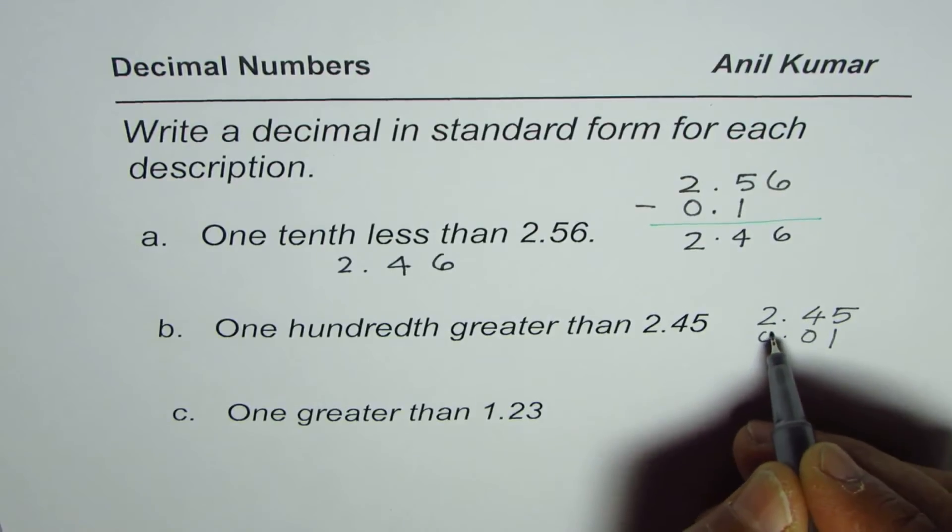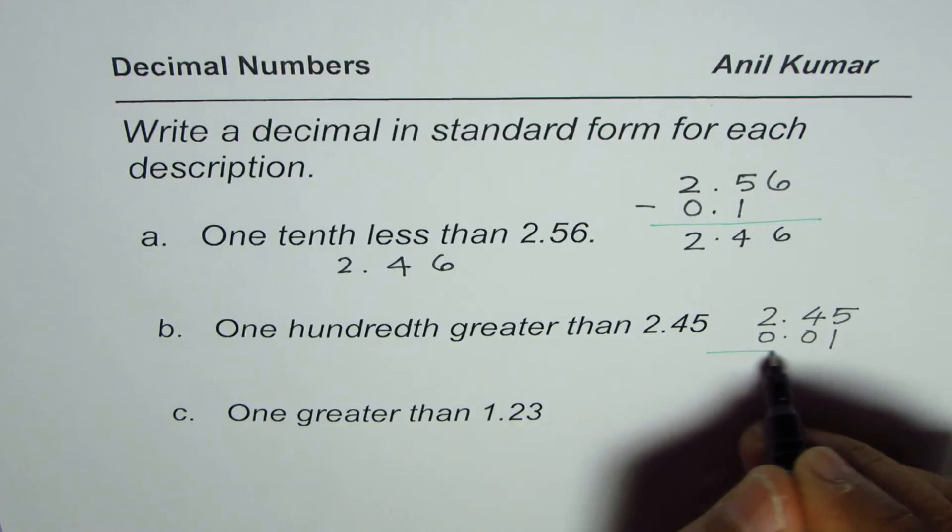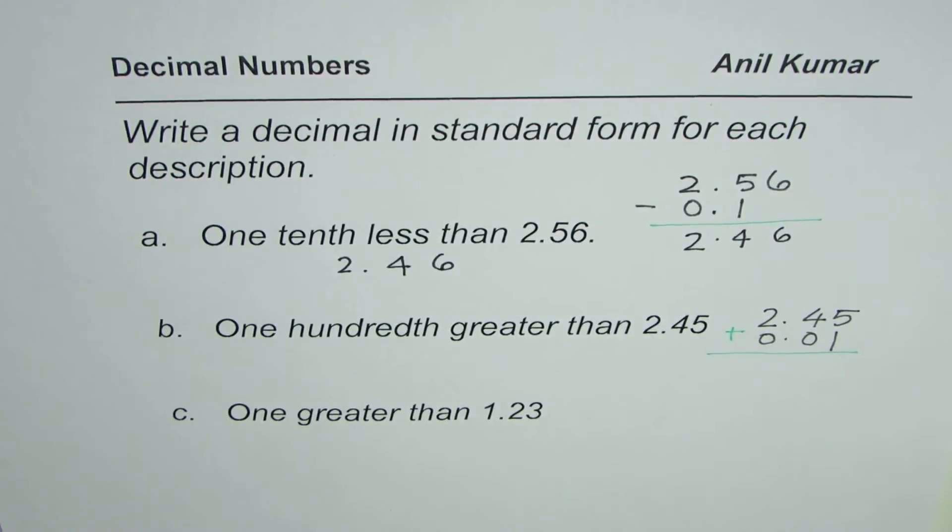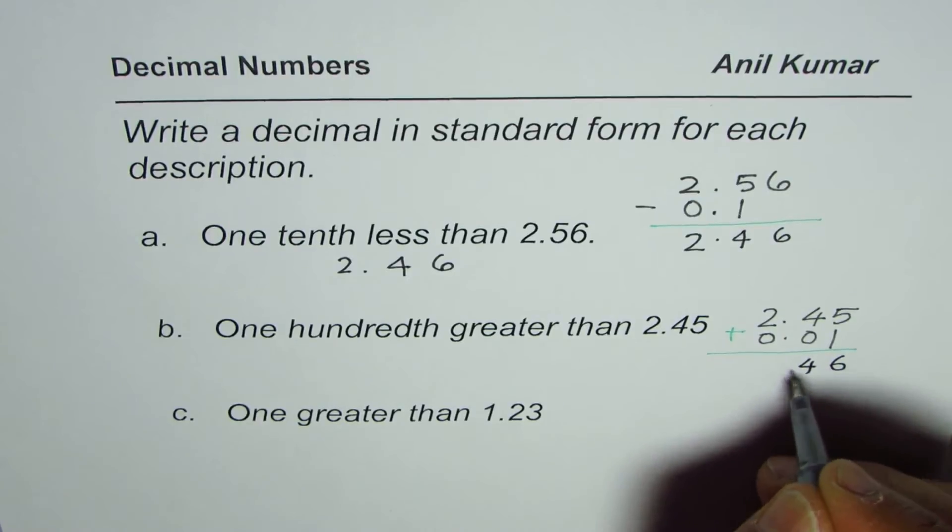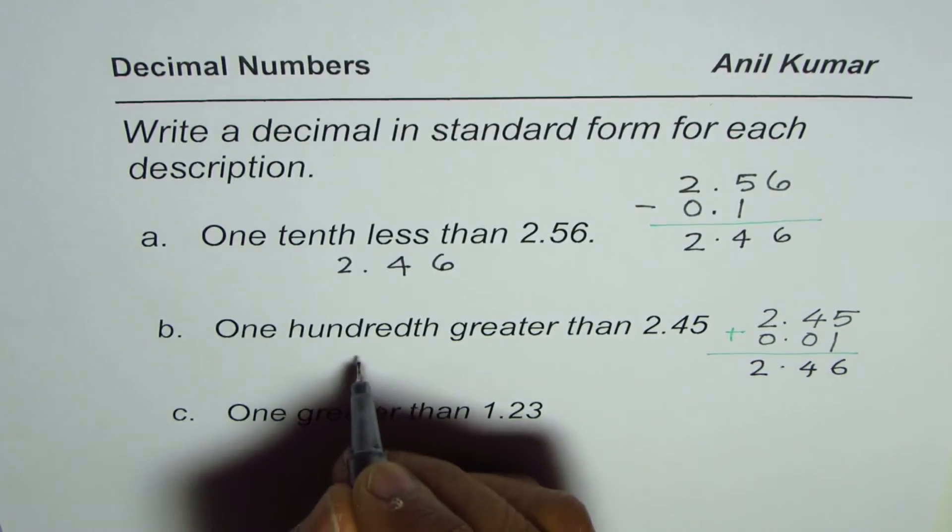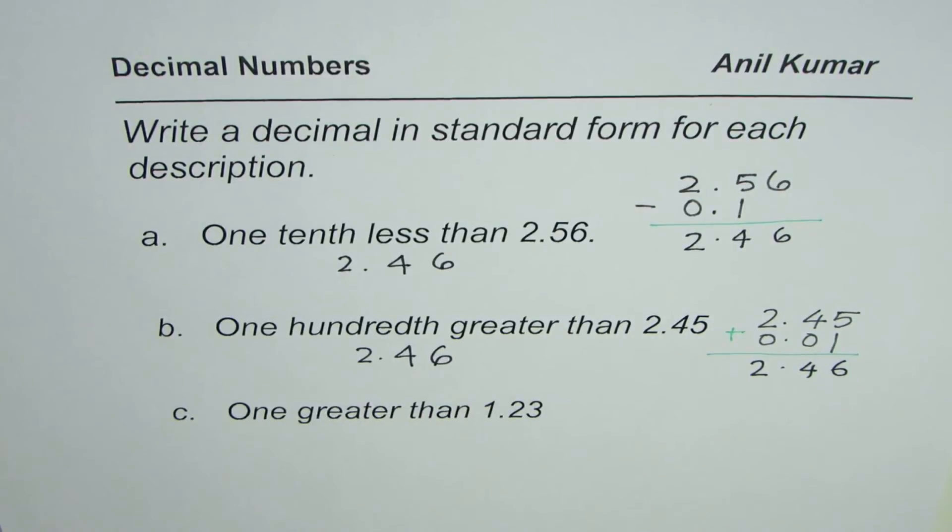So we write 0.01 on the other side. So we have to this time add since it is greater than. So when you add you get 6, 4 and 2. So the answer is 2.46 again. That is the answer.